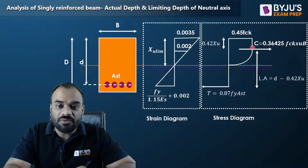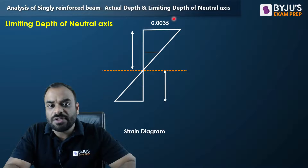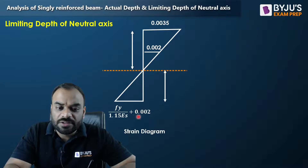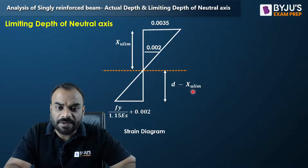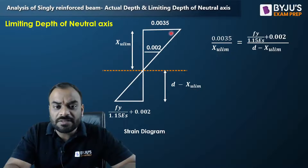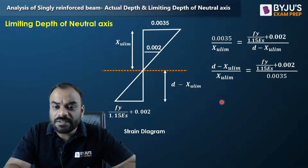Let's understand the limiting depth of neutral axis. In the strain diagram, the top value is 0.0035, and at the level of the tensile steel the strain is FY divided by 1.15ES plus 0.002. This particular depth is the limiting depth of neutral axis (XU limiting), and the remaining distance is D minus XU limiting. Applying the similar triangle concept: 0.0035 divided by XU limiting equals the steel strain divided by (D minus XU limiting).